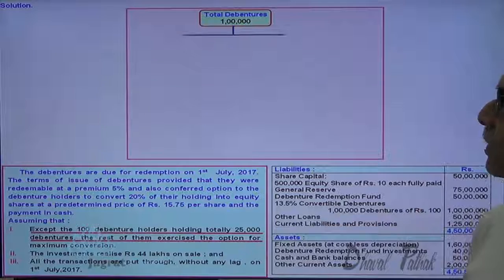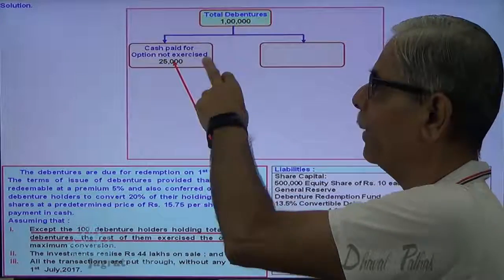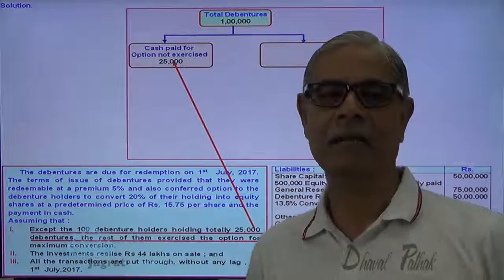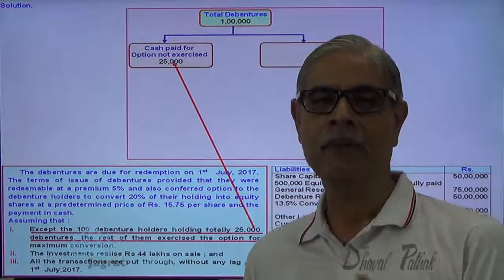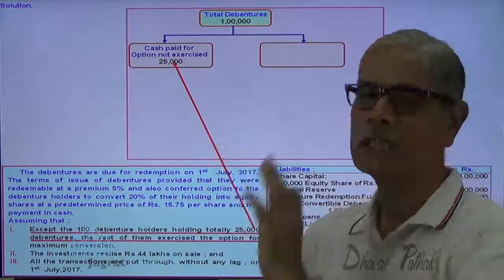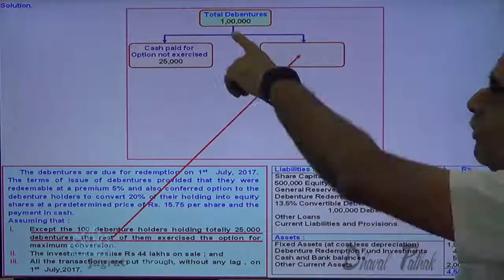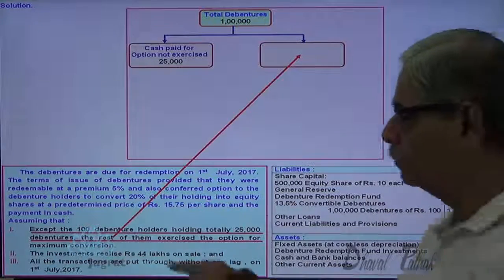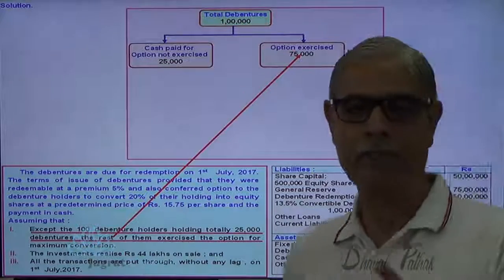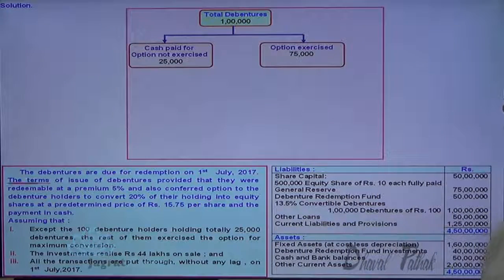Out of 1 lakh debentures, these 25,000 debentures were paid cash, as the option was not exercised by them. So on 25,000 debentures, we are required to pay cash with premium — face value plus premium is payable on these 25,000 debentures. The remaining 75,000 debenture holders have exercised the option.